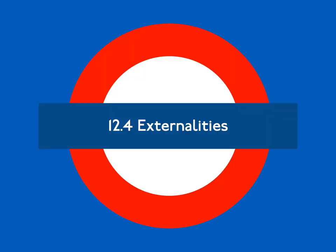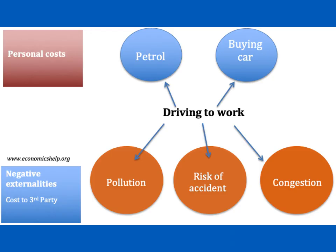12.4 Externalities. Many costs of travel are not borne by the traveler. Some costs are perceived by the traveler and enter into the decision about mode, route, or destination — these private or internal costs are borne by the traveler. Other costs are not: these are termed externalities or social costs, and include the congestion the traveler causes other people, the pollution they generate, and the noise they make.